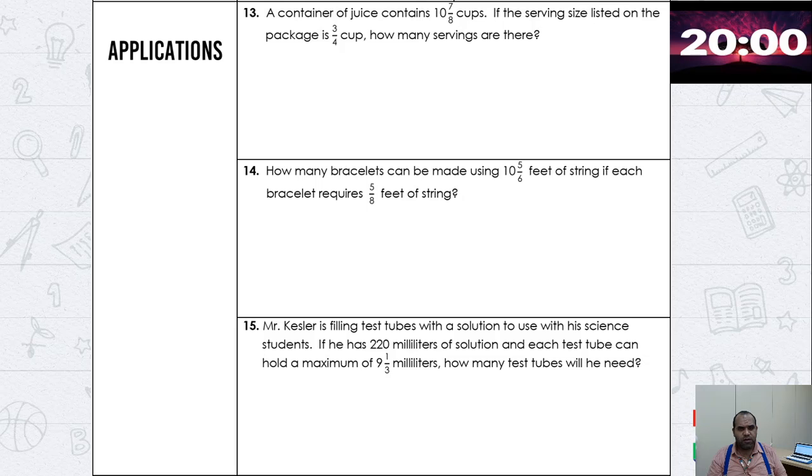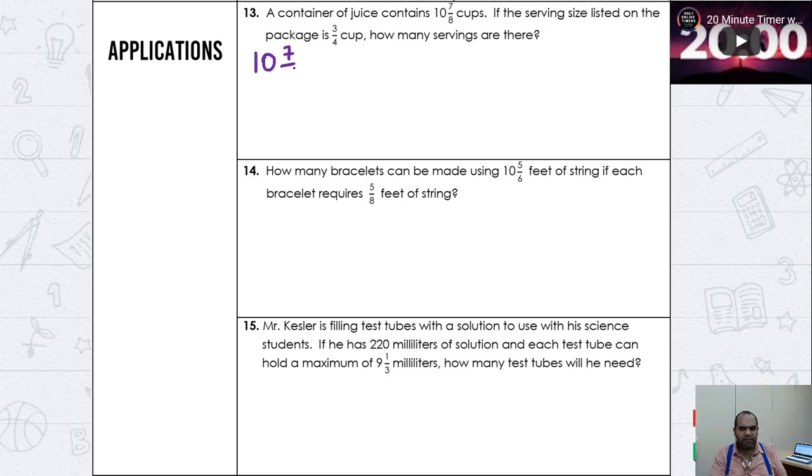Here's some word problems. Let's solve this first one. A container of juice contains ten and seven eighths cups. If the serving size listed on the package is three fourths cup, how many servings are there? This is easy. You have the big number, ten and seven eighths cups, divided by three fourths each cup. That's how many servings. Right now, first thing, you write the mixed number as an improper fraction. I have eighty-seven over eight. Ten times eight is eighty, plus seven is eighty-seven. Divided by three fourths.